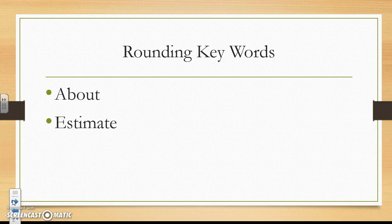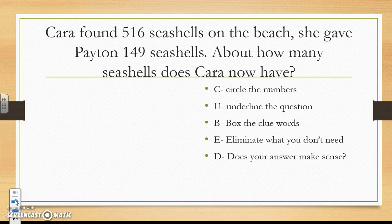Now let's try this with some key words. If you see these key words in your word problem, know that you are to round before you give an answer. If you see the words 'about' or 'estimate,' you need to round the numbers in the problem before you do any type of operation — which would be addition, subtraction, multiplication, or division. Here is an example, and remember we are going to use our CUBE strategy.